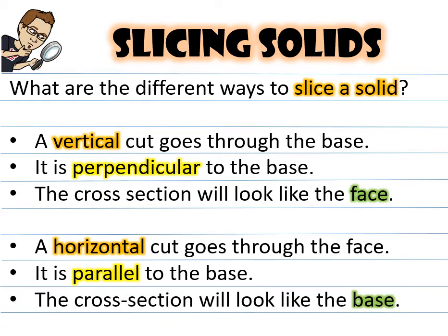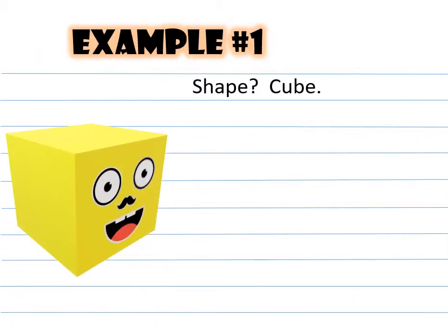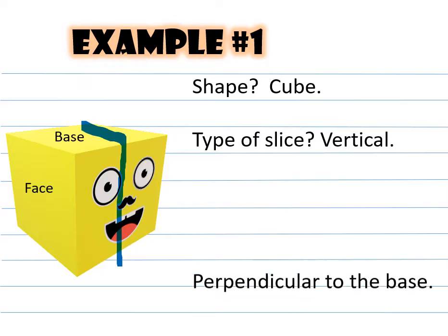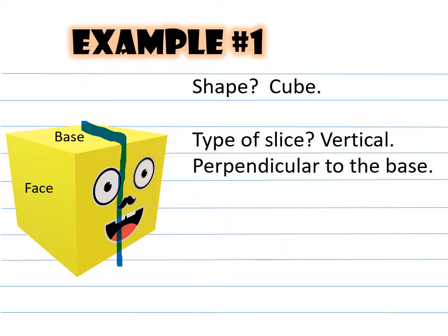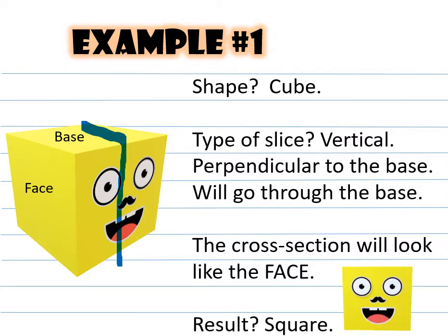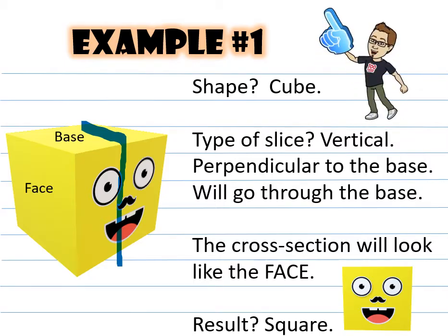A horizontal cut goes through the face; it is parallel to the base, and the cross section will look like the base. Example number one: the shape is called a cube. The type of slice is vertical — it is perpendicular to the base and will go through the base. The cross section will look like the face. The result looks like a square.